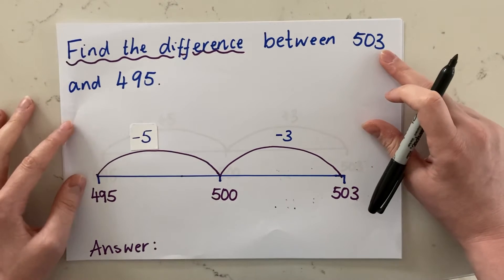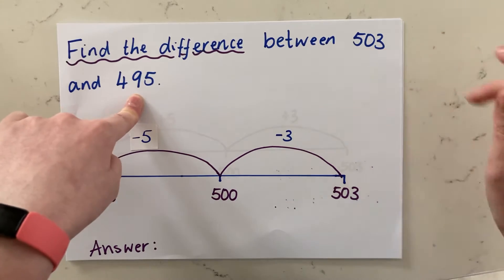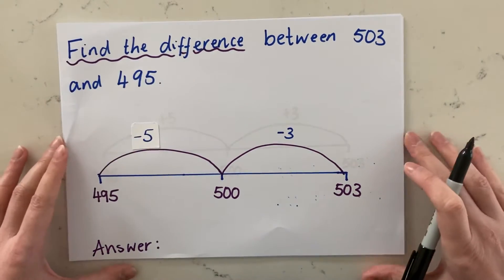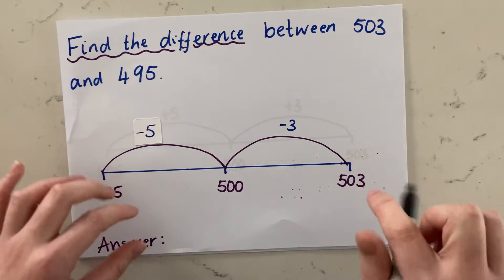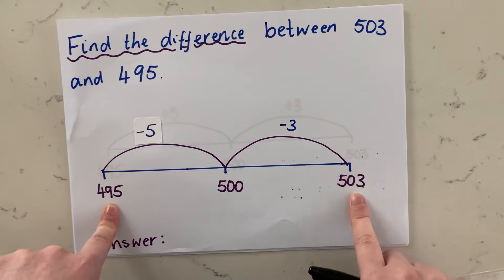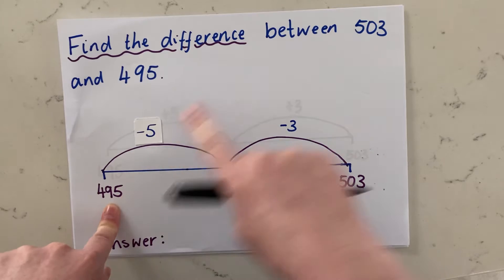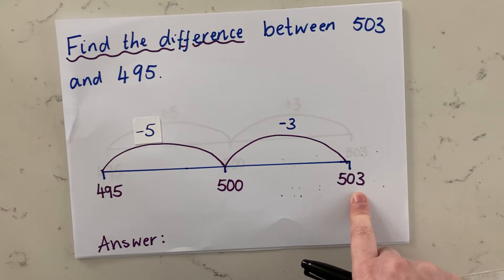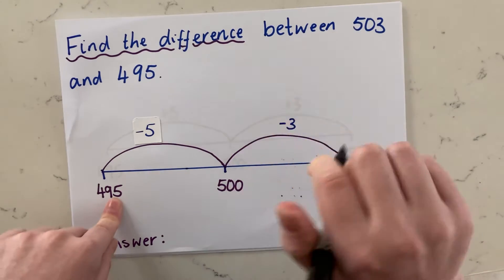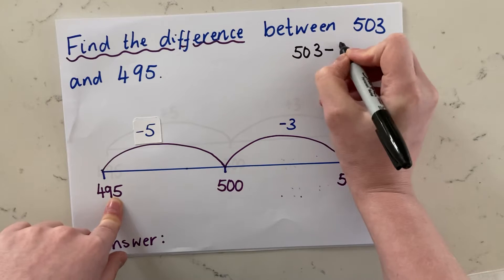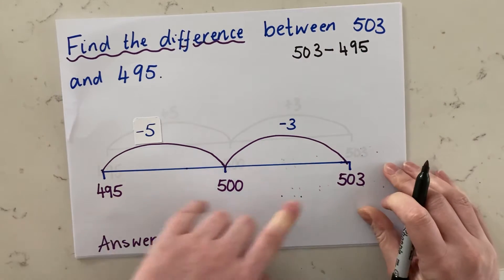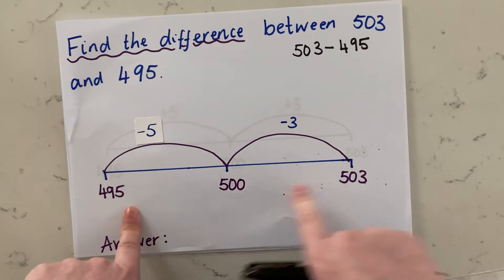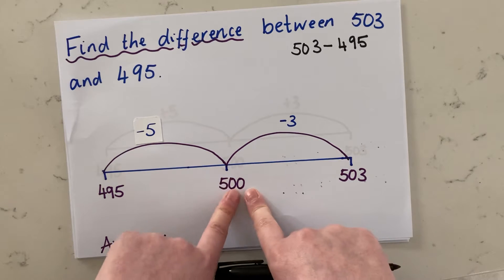If you're asked to find the difference between 503 and 495, this is what we'll do. We want to know what is the difference — how many numbers are there in between 495 and 503? So we're going to be doing this in our head, but we're going to use a number line to help us. The smallest number comes on the left side and the bigger number comes on the right hand side. So smallest number is 495, biggest number 503. These are near multiples of 100 — they're both very close to 500. The nearest hundred to both of these numbers is 500, so we can use that to break down the calculation.